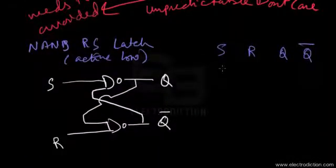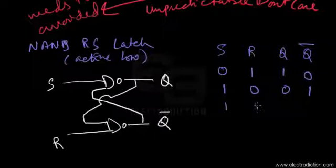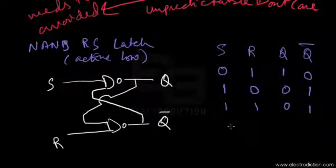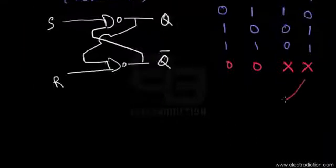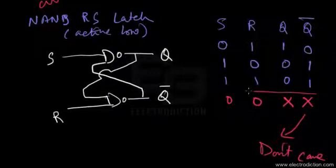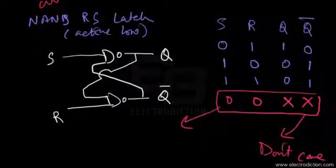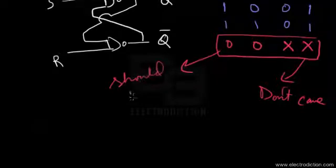For the NAND RS latch: with S=0 and R=1, Q is set to one and Q-bar to zero. With R=0 and S=1, Q is set to zero and Q-bar to one. With both R and S at one, the Q and Q-bar states remain unchanged. With both R and S at zero, the outputs go to the don't care states.